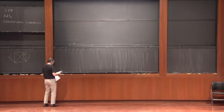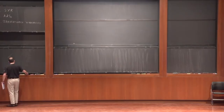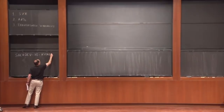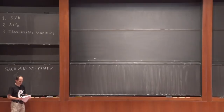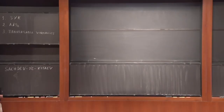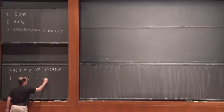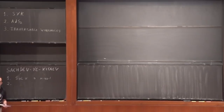So we're going to be talking about the SYK model. The name stands for Sachdev, Ye, and Kitaev. A variant of this model was introduced by Sachdev and Ye in the 1990s, and a couple of years ago Kitaev simplified the model and pointed out some of its interesting features. It is solvable in the large-N limit — that's one reason to study it. The second is that it's a model in which you can see thermalization and quantum chaos in the context of a solvable model.